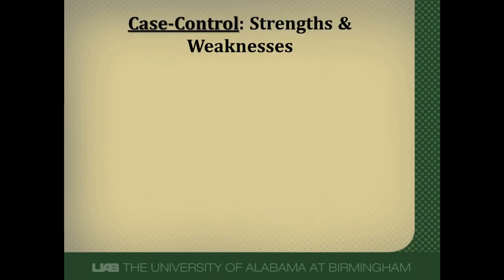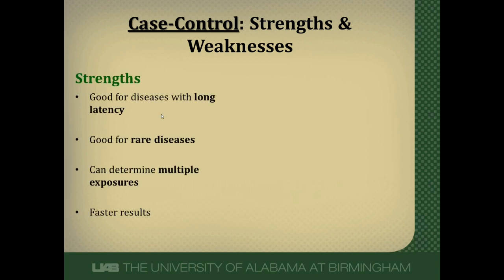Case control studies have certain strengths and weaknesses. Starting with strengths: they're good for diseases that have a very long latency — a long time to develop — because we start with disease right off the bat and don't have to wait for disease to develop. They're also good for rare diseases, since we can capture all patients who have that disease right up front. They're also useful for identifying all possible causes of a disease because we're going backwards in time looking at multiple exposures. And because everything has already happened, you can get much faster results.